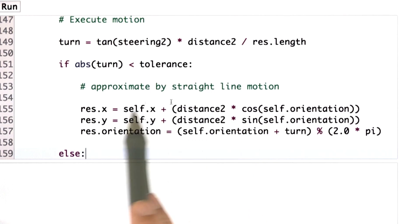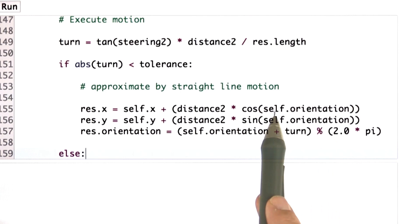Then I just model a straight motion. I get my new robot coordinates from the old robot coordinates moving in the orientation of the robot—cosine for x, sine for y—and I increase my orientation by turn, which is likely essentially zero. In the case I go beyond zero or 2pi, I do the modulo operation here just to make sure my angles are nicely between zero and 2pi.